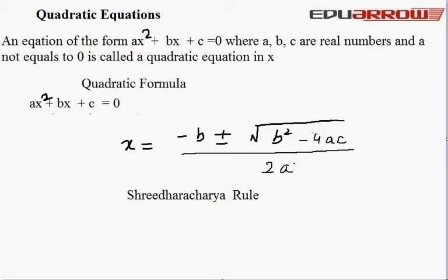Now we read quadratic equation. An equation of the form ax² + bx + c = 0, where a, b, c are real numbers and a ≠ 0, is called the quadratic equation in x.